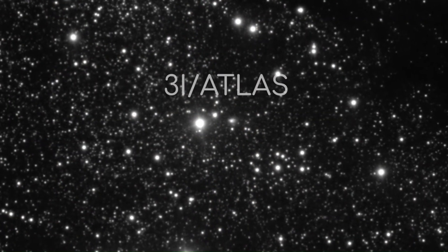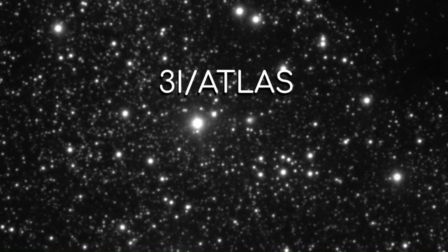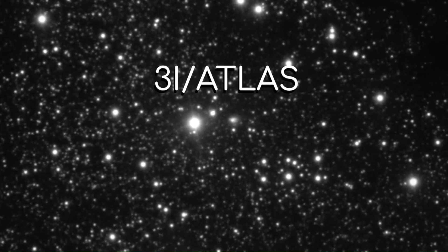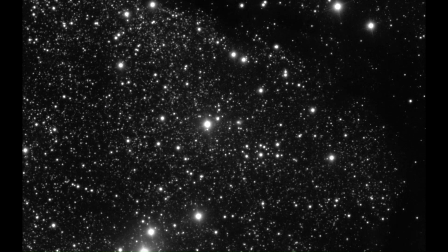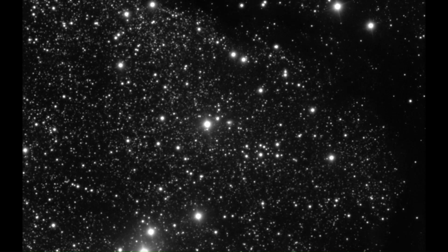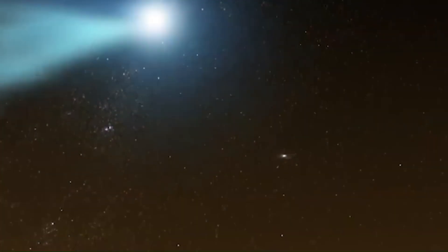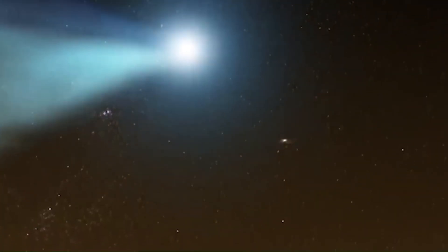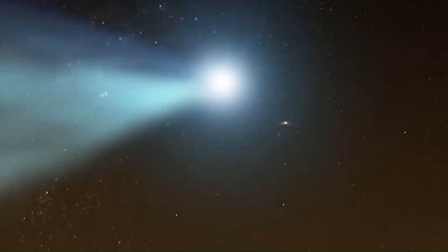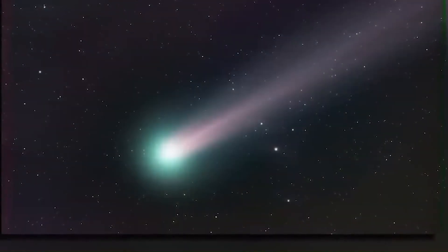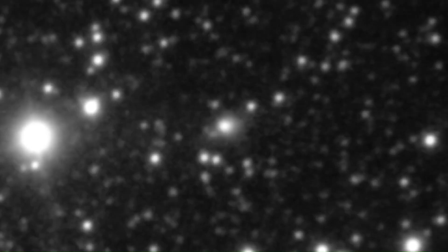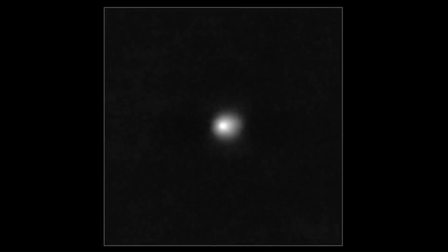Time is short. 3I Atlas is moving on a hyperbolic path, which means it's not bound to the sun and will leave the solar system. By early 2026, it will be near Jupiter, our last real chance to study it up close. After that, it will fade into deep space. Its brightness will drop, its coma, the cloud of dust and gas around it, will shrink, and its light will disappear into the background of space. If we don't gather enough data now, it will be gone like 2017's Oumuamua, leaving only questions.